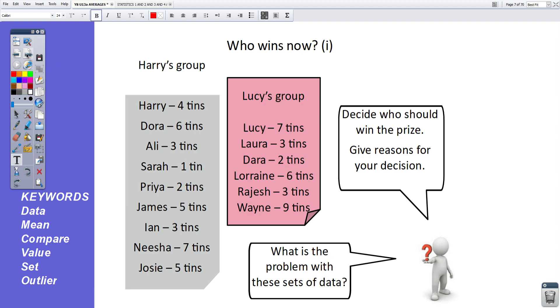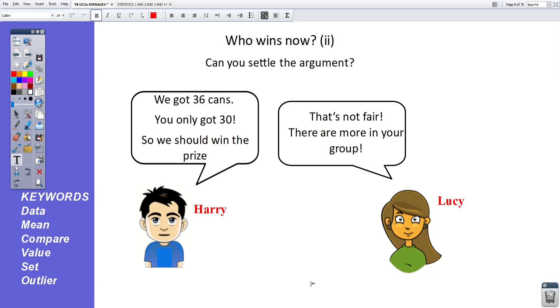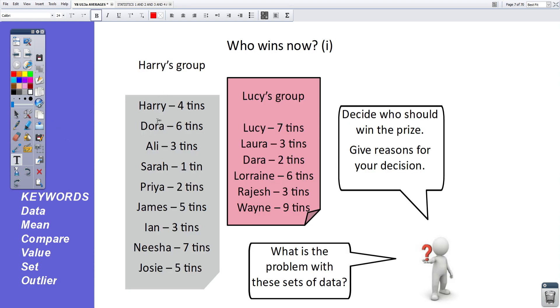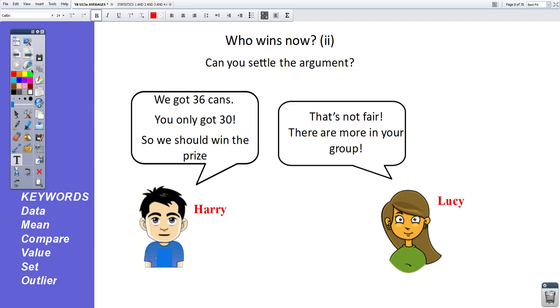However, things change when we've got this kind of situation. Who wins now? Harry's group. I won't name all the people and how many tins they've got. Lucy's group. Again, several people collecting different tins. And now decide who should win the prize and give reasons for your decisions. Right, who wins now? Can you settle the argument? Well, Harry totaled up his group. And in his group, they collected 36 cans. Whereas Lucy's group only collected 30 cans. So Harry is saying we should win the prize.